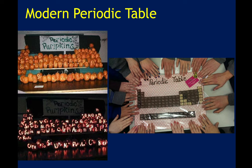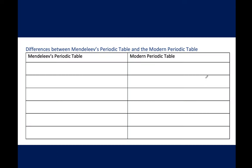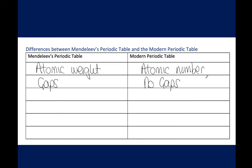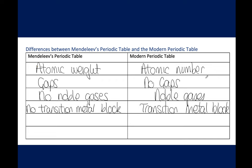You need to be able to explain the differences between Mendeleev's periodic table and the modern periodic table. First, how they're arranged: Mendeleev organized by atomic weight, while the modern periodic table organizes by atomic number. Mendeleev's table has gaps; our modern one does not. Mendeleev's table has no noble gases — we now have a group for them — and Mendeleev had no transition metal block, but we now do. If asked about both, you need to mention a point about each table.